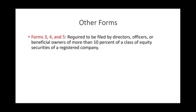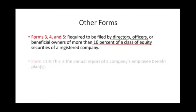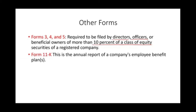Forms 3, 4, and 5 are required to be filed by directors, officers, or beneficial owners of more than 10% of a class of equity. For instance, when Warren Buffett buys a large chunk of a company exceeding 10%, the public must be informed via these forms. Form 11K is the annual report of a company's employee benefit plan — typically a pension or 401K — reporting the plan's financial figures.